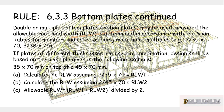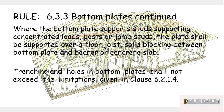The rule goes on to say that double or multiple bottom plates may be used, provided the allowable roof load width is determined in accordance with the span tables for members made up of multiples. Also, where the bottom plate supports studs carrying concentrated loads, the plate shall be supported over floor joists, solid blocking between the bottom plate and the bearer, or a concrete slab. Trenching or holes in the bottom plate shall not exceed the limitations given in clause 6.2.1.4.